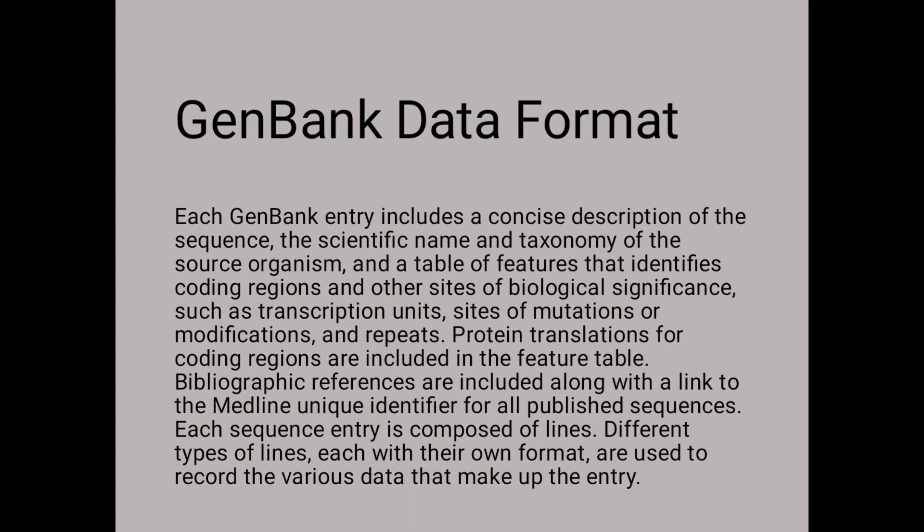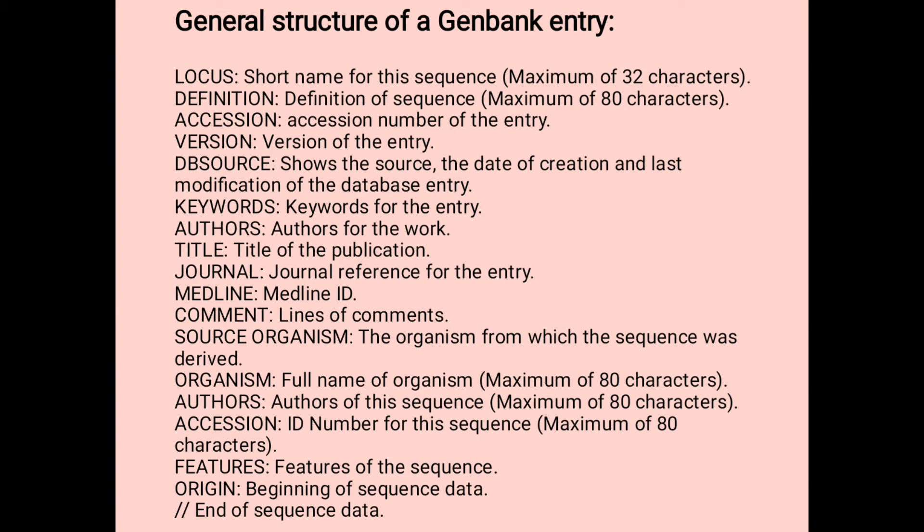Each GenBank entry includes a consistent description of the sequence, the scientific name and taxonomy of the source organism, and a table of features that identifies coding regions and other sites of biological significance, such as transcription units, sites of mutations or modifications, and repeats. Protein translations for coding regions are included in the feature table. Bibliographic references are included along with a link to the MEDLINE unique identifier for all published sequences. Each sequence entry is composed of different types of lines, each with their own format, used to record the various data that make up the entry.